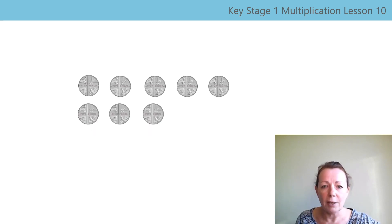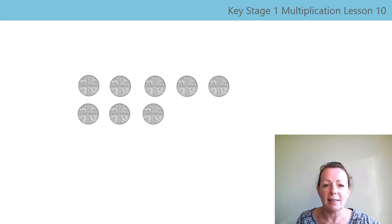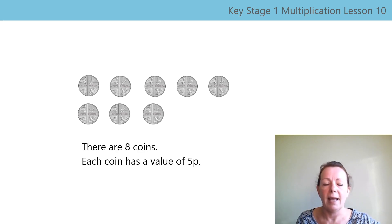What is the value of this set of five-pence coins? Pause the video while you work it out. That's right, it's forty-p. Let's say those stem sentences together again: there are eight coins, each coin has a value of five-p, this is forty-p. You're doing really well.